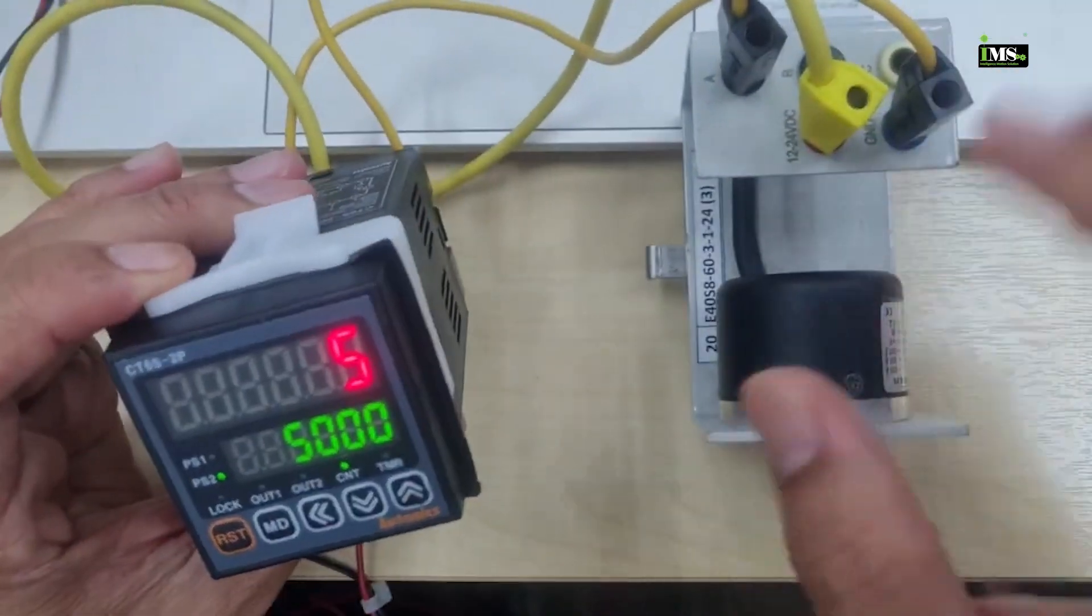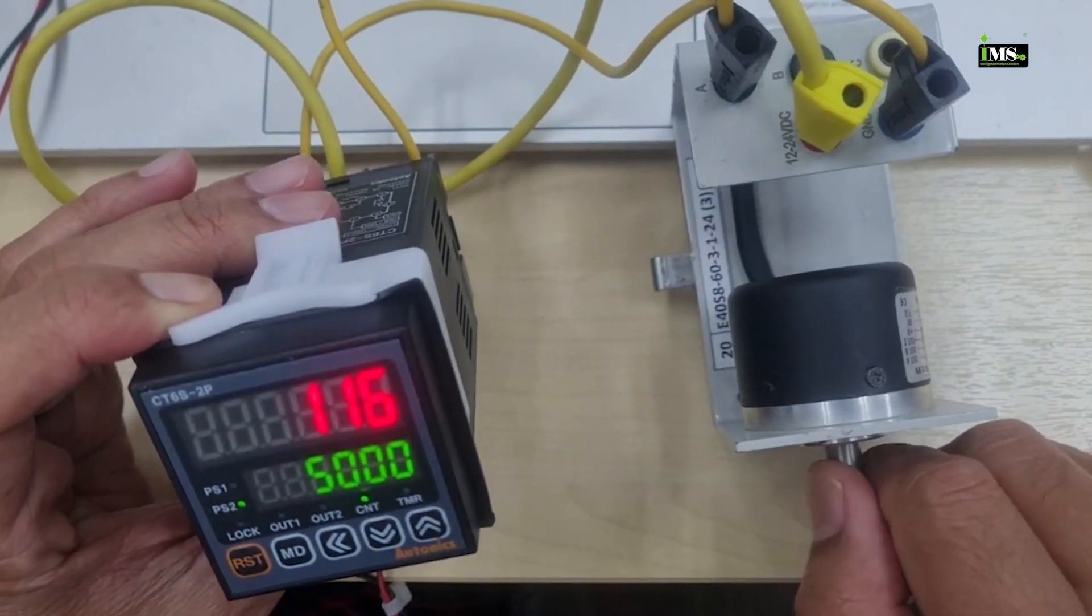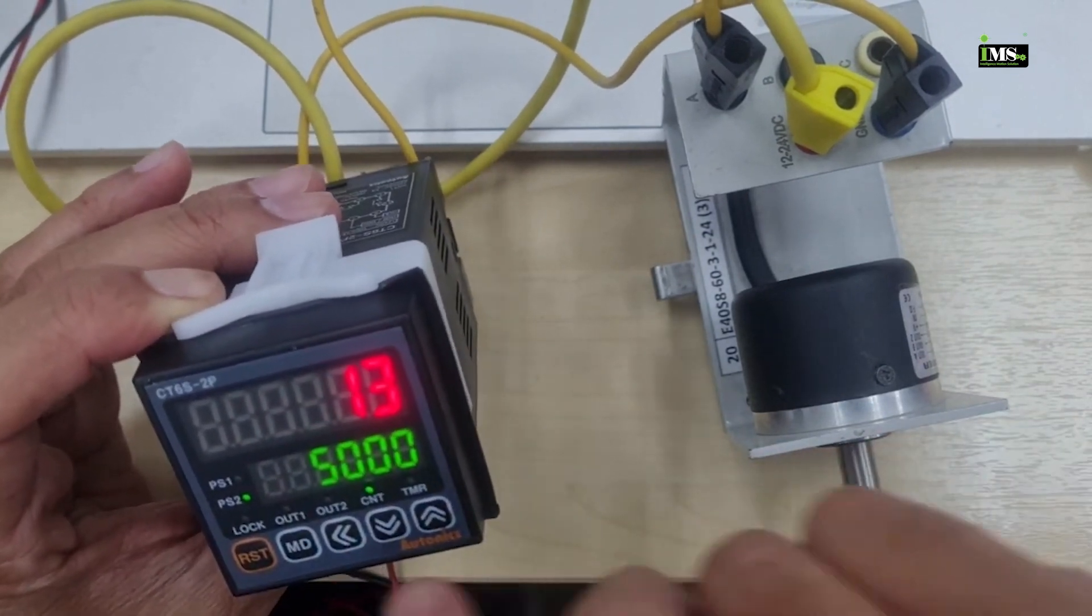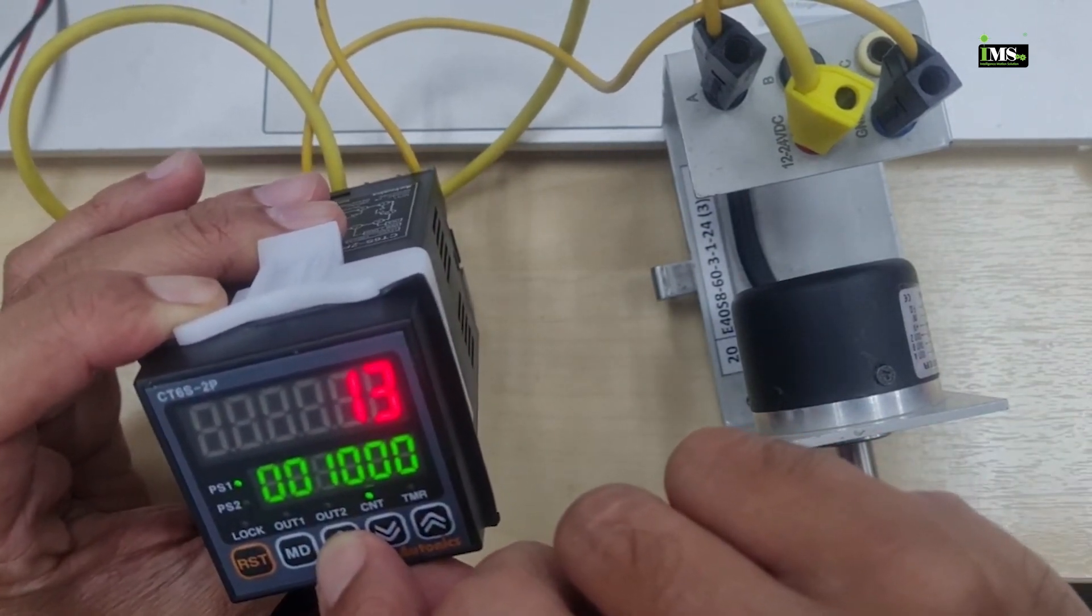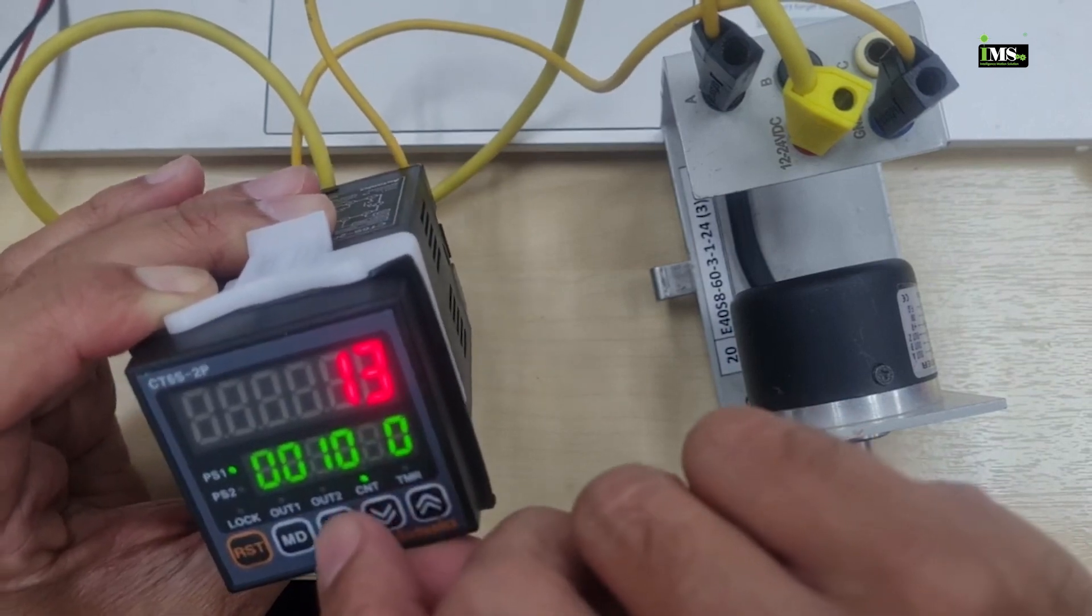Okay, now I try to count using encoder. Yes, this counter is able to receive encoder output. Okay, use reset button to reset it. Setting also set value one and two - I will set 20 for set value one and two.